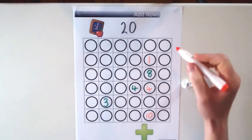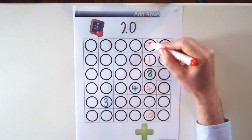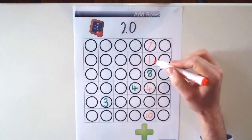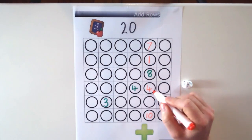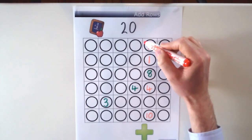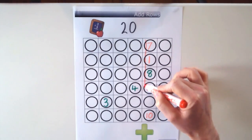So if we add the 7 and we can write the 7 there, 7 plus 1 plus 8 plus 4 equals 20. Because that's our target number we can circle that row.